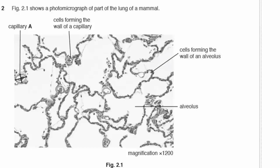Question 2. Figure 2.1 shows a photomicrograph of part of the lung of a mammal. In the lungs we have alveoli — each large air sac is one alveolus. In among the alveoli are capillaries, which are the smaller circles between them. Inside some capillaries you can see red blood cells, depending on how the section was cut.